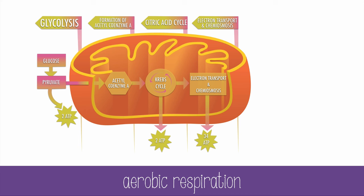During the Krebs cycle, two ATP and the gas carbon dioxide are produced. The carbon dioxide will eventually diffuse out of the cell — this is why we breathe out carbon dioxide. The electron transport chain and chemiosmosis take place in the folded inner membrane of the mitochondria, called the cristae.